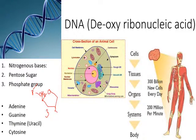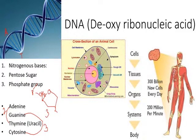DNA has two complementary strands. Adenine pairs with thymine, and guanine pairs with cytosine. Adenine and thymine form two hydrogen bonds, while guanine and cytosine form three hydrogen bonds. So, for example, if we have adenine in one strand, the complementary strand will have thymine, attached by hydrogen bonds. Similarly, guanine in one strand pairs with cytosine in the other. GC bonds are stronger because they contain more hydrogen bonds.